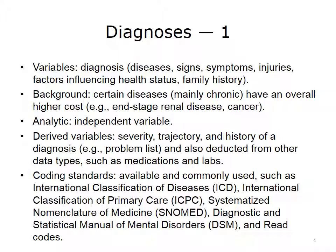Derived variables from diagnoses may include severity of a disease, trajectory of a disease over time, and history of a condition that could be extracted from a problem list. Also, certain variables such as medications and lab values are sometimes used to induce missing diagnosis codes. For example, consistent high levels of hemoglobin A1C can be an indication of a diabetes diagnosis if the diagnosis is missing.